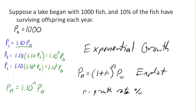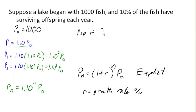Now we can go ahead and use this equation to make predictions. So for example, if I wanted to predict the population in, let's say, 20 years, I could figure out what P sub 20 is. That would be 1.10 to the 20 times the initial population of 1,000.